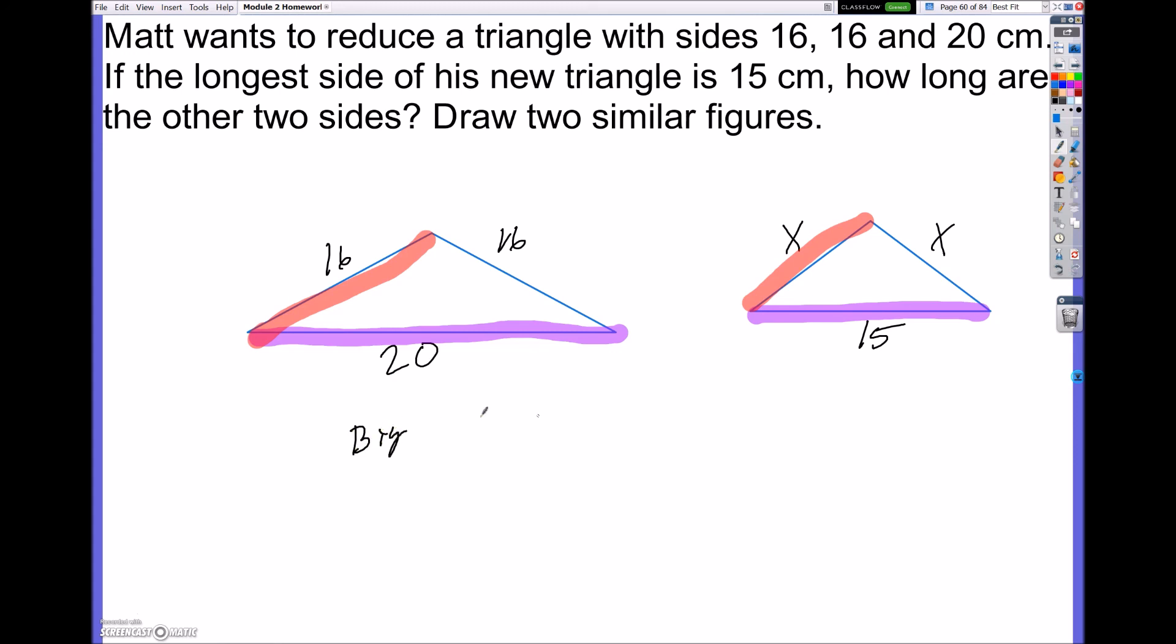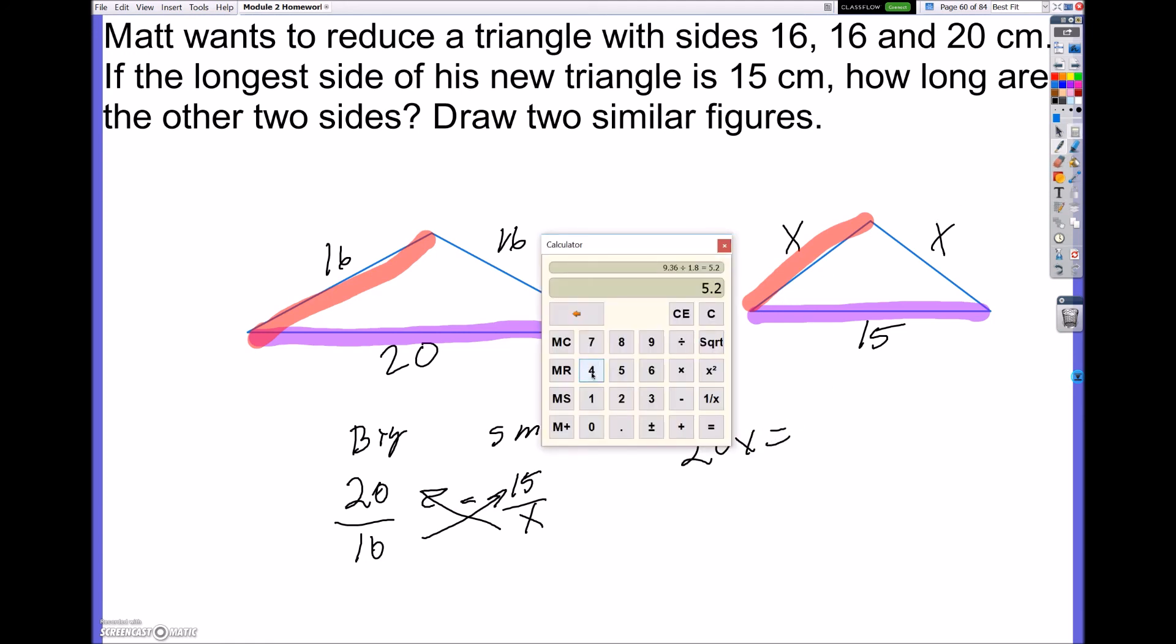So if I set these up, I always have my big and my small. I have 20 over 16. And then I have 15 over X. See how my purples are both on my numerator and my 16s are both on my denominator? That'll help us solve. So now, it's going to equal each other because they're proportional. I'll have 20X is equal to 16 times 15. So 16 times 15 equals 240, which means when I divide both sides by 20, I'm going to have X is equal to 12, which means the length of these two smaller sides is going to equal 12.